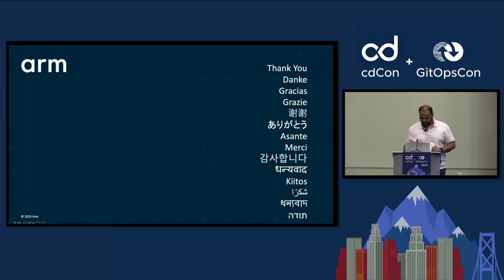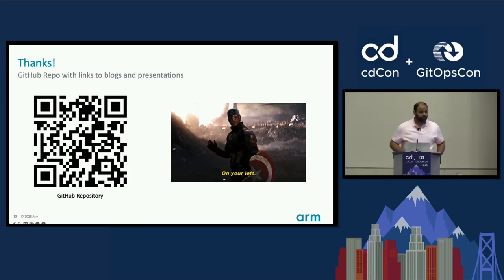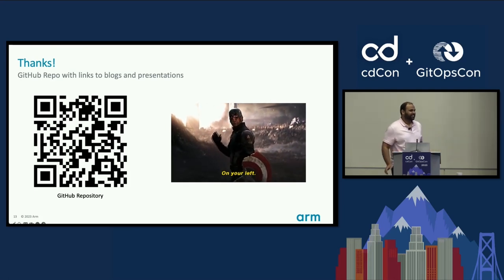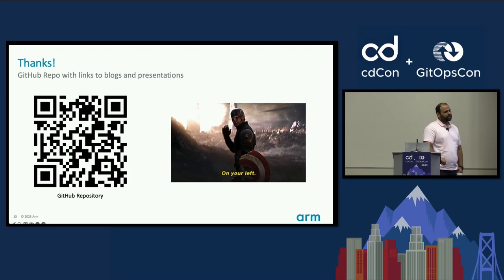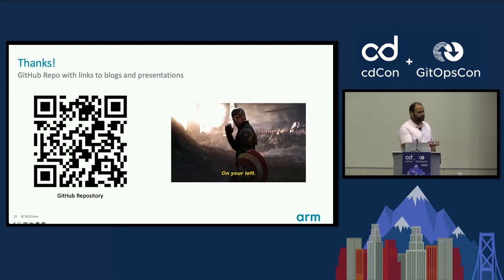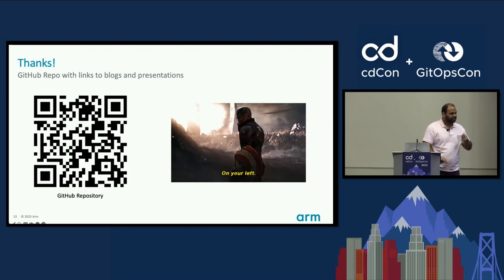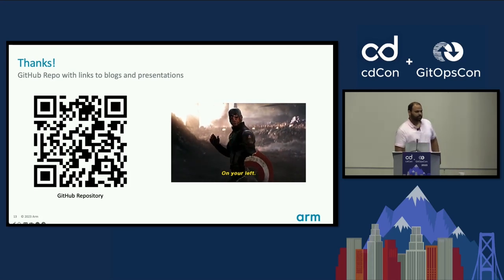That's the end of my presentation. We have a few minutes for questions. One question: have you found relevant differences within Linux distributions on ARM where we should bias towards one or another? To be honest, it depends on what kind of applications you're trying to build. All major OS distributions are supported — Ubuntu, CentOS, and others. For CI/CD workloads shipping Java code, I don't think we've found major differences, but I'll reach out if I find anything.